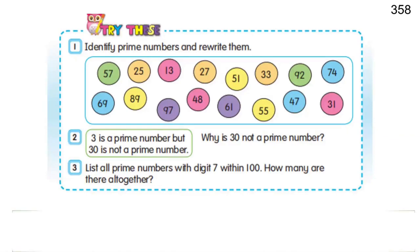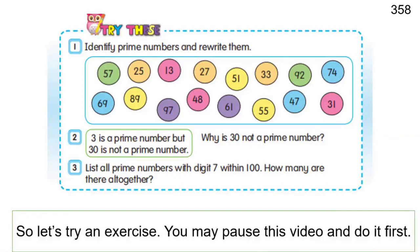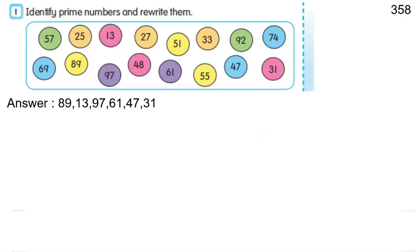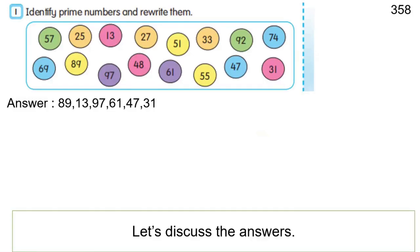So let's try an exercise. You may pause this video and do it first. Let's discuss the answers. Question 1: Identify prime numbers and rewrite them. Answer: 89, 13, 97, 61, 47, 31.